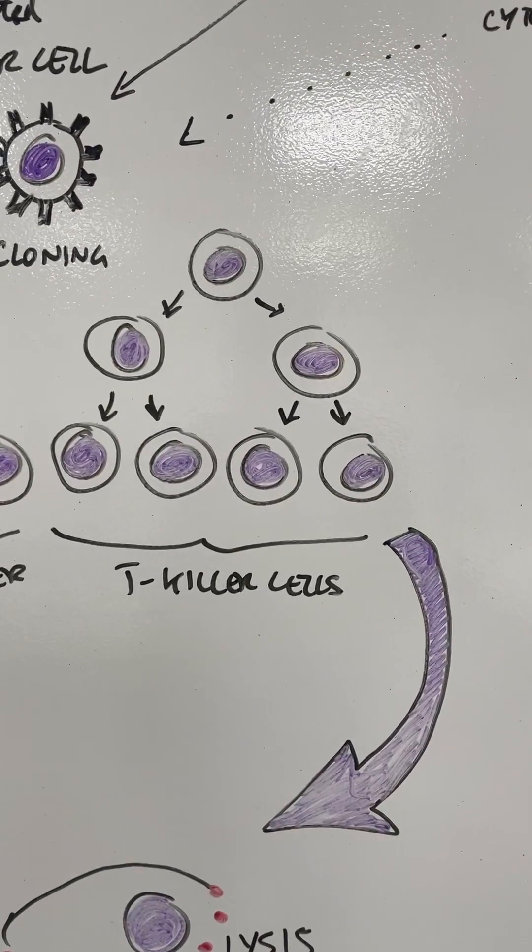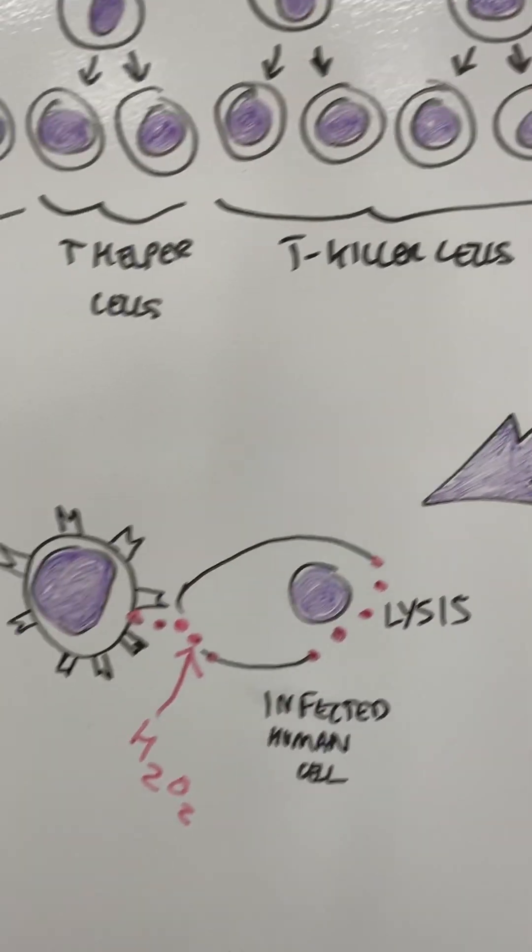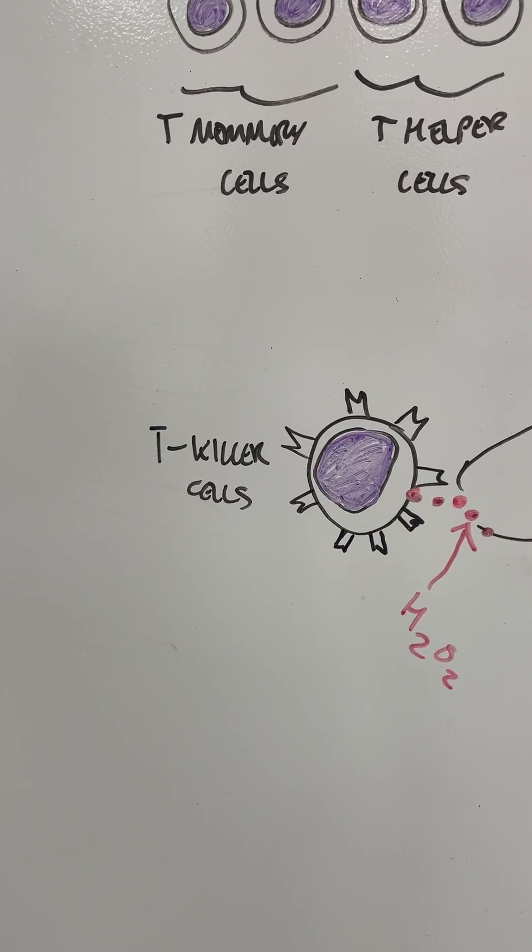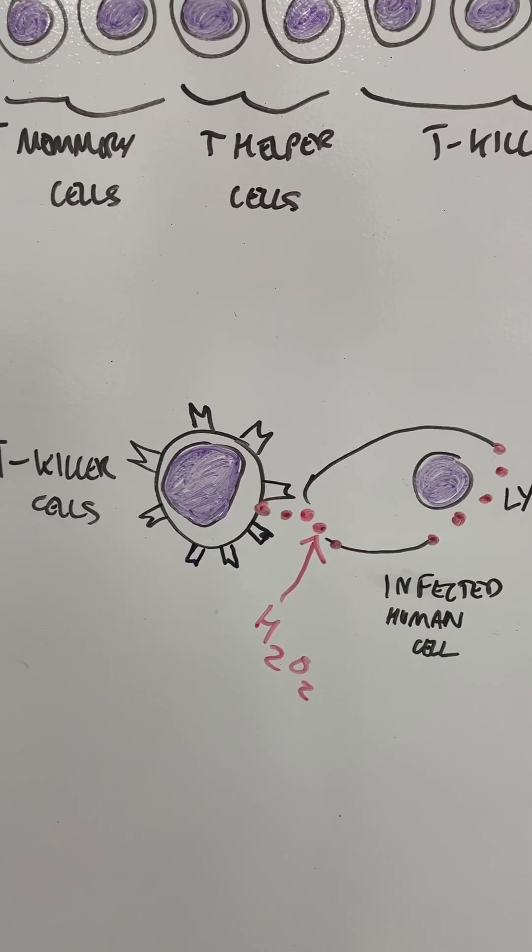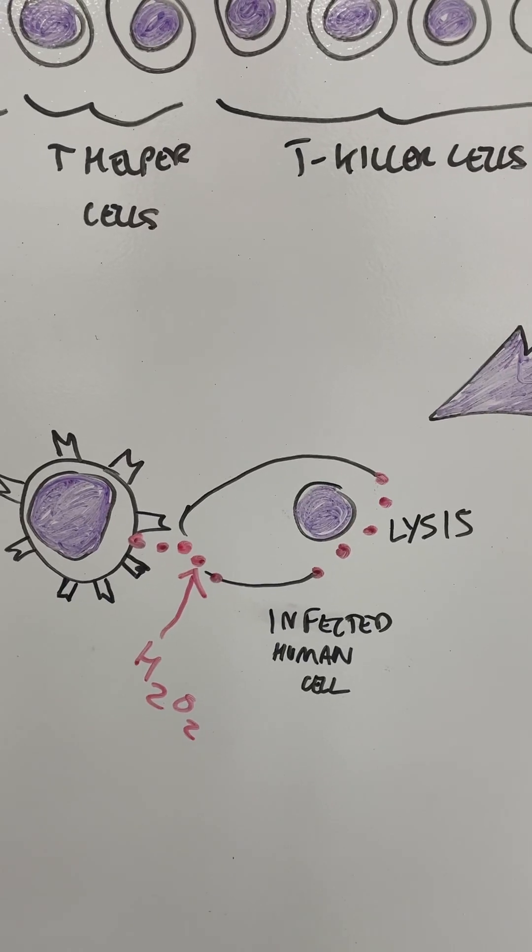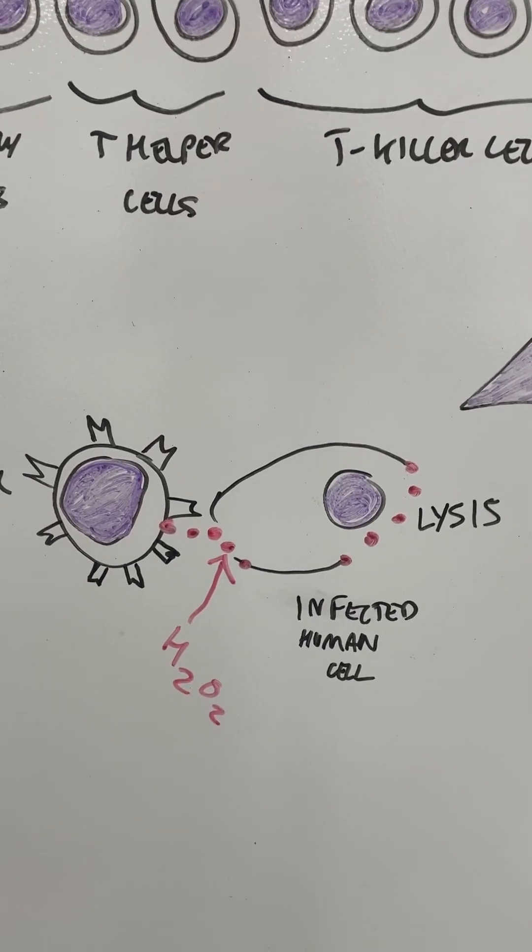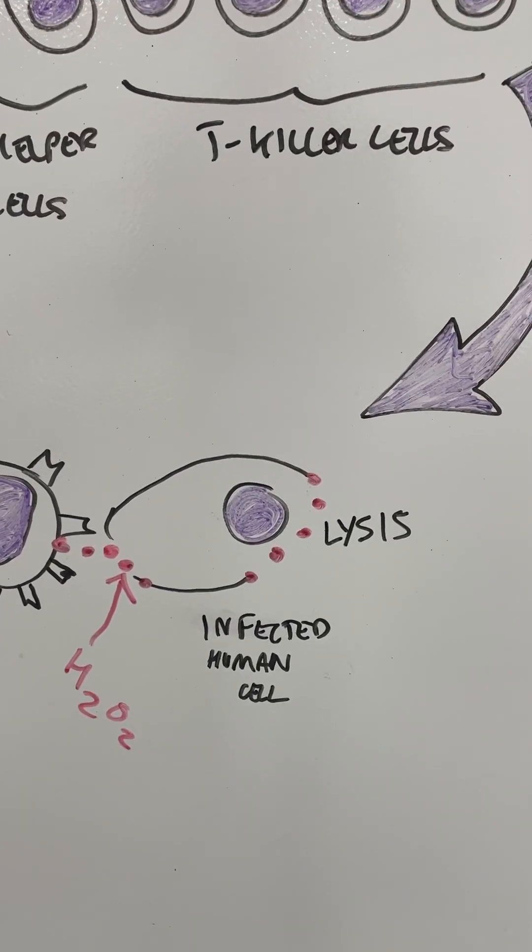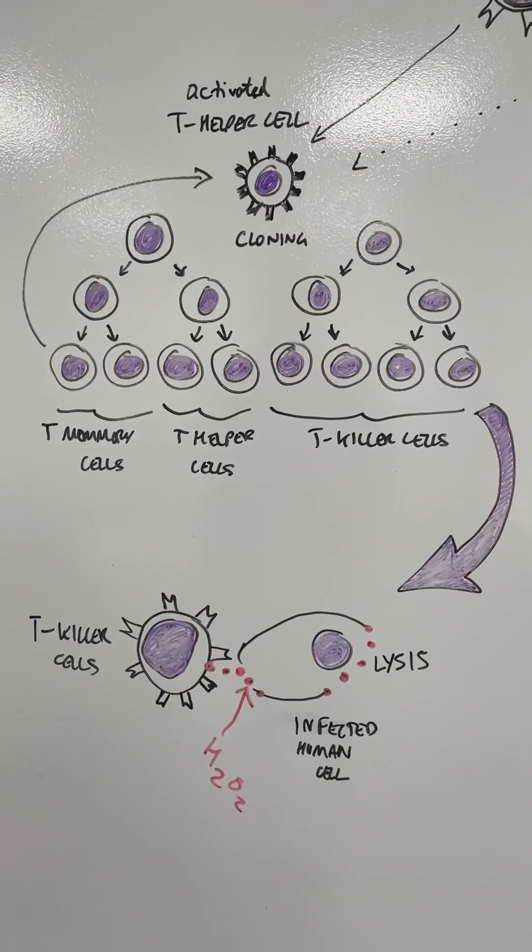But a lot of them will become these T killer cells, cytotoxic T killer cells. What these do is they can release chemicals which can destroy cells that have already become infected. They can release things like hydrogen peroxide which can then destroy infected cells. That's why they're called T killer cells.